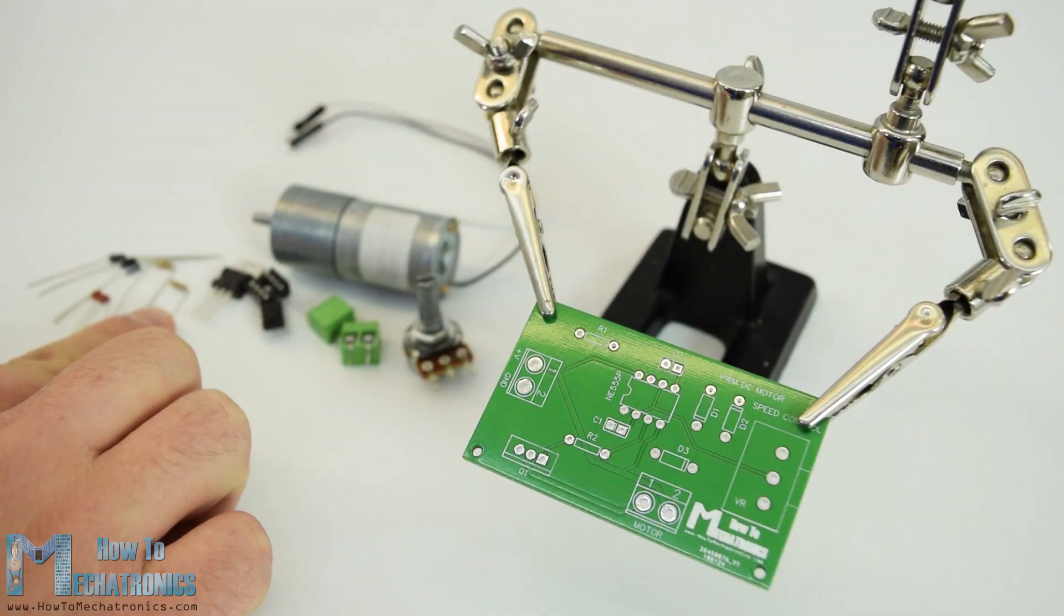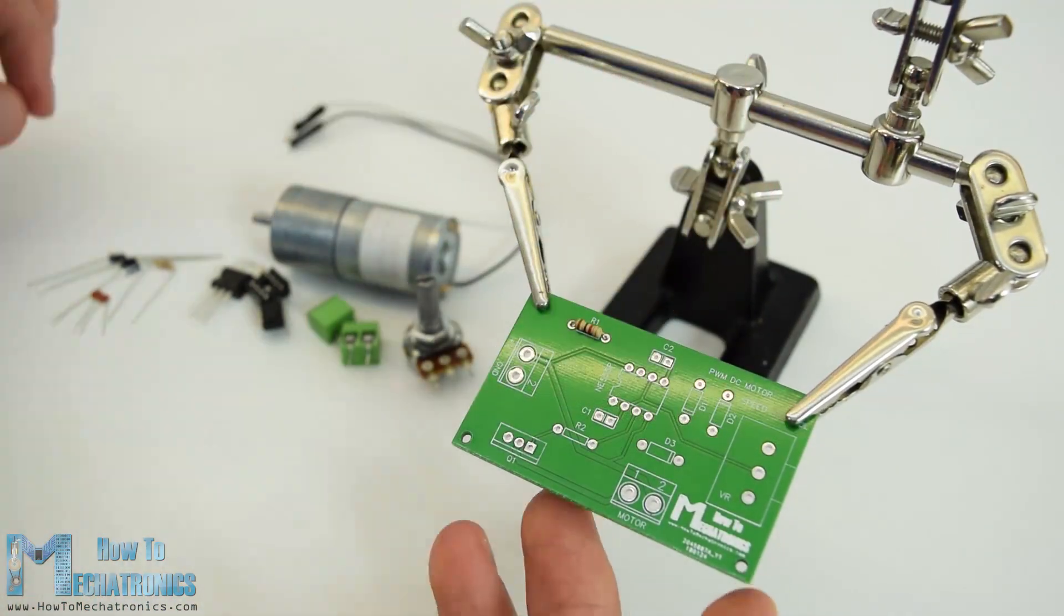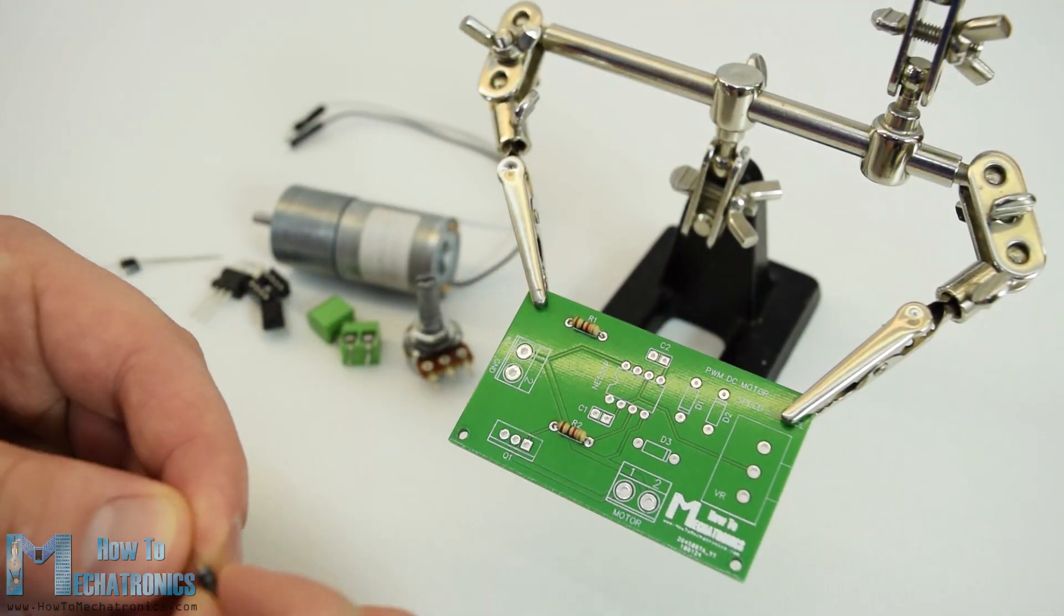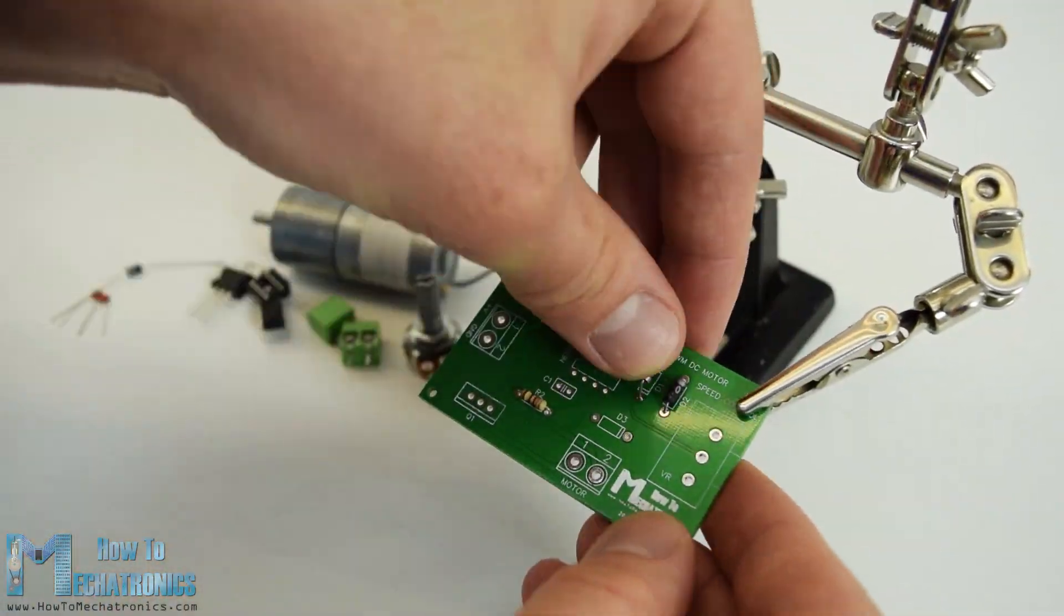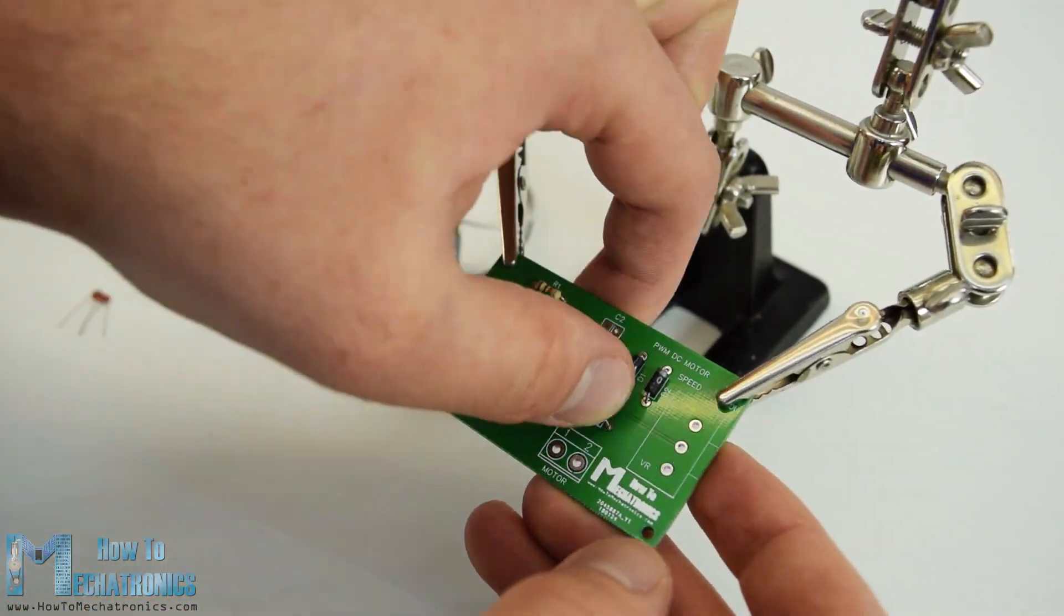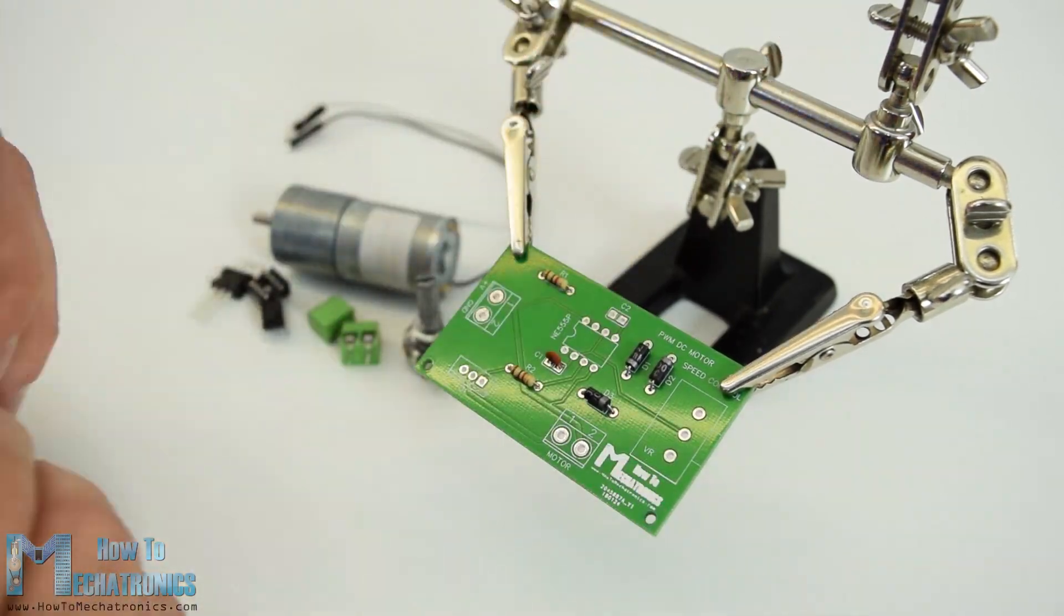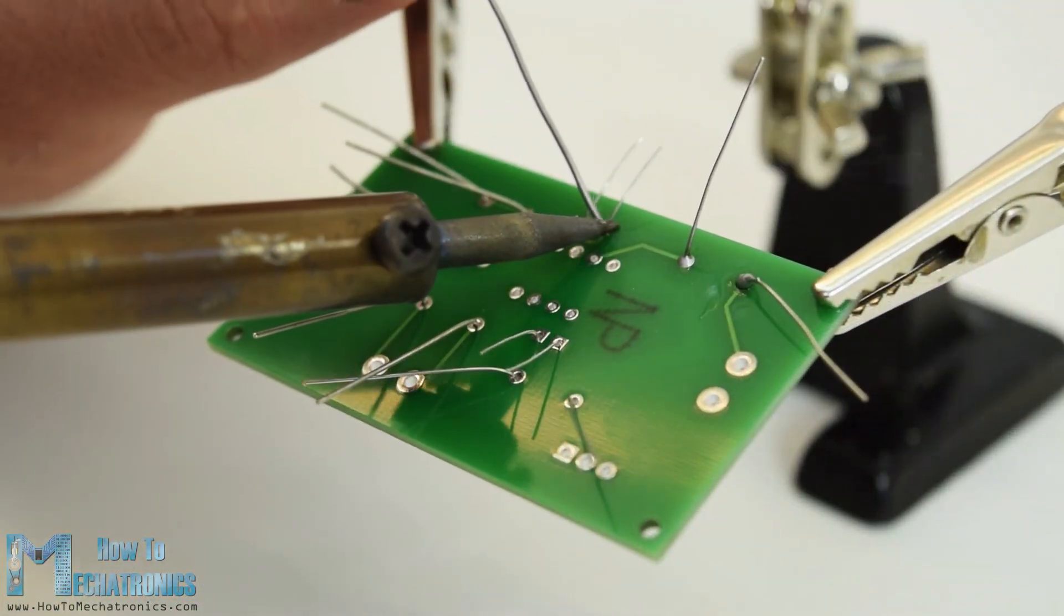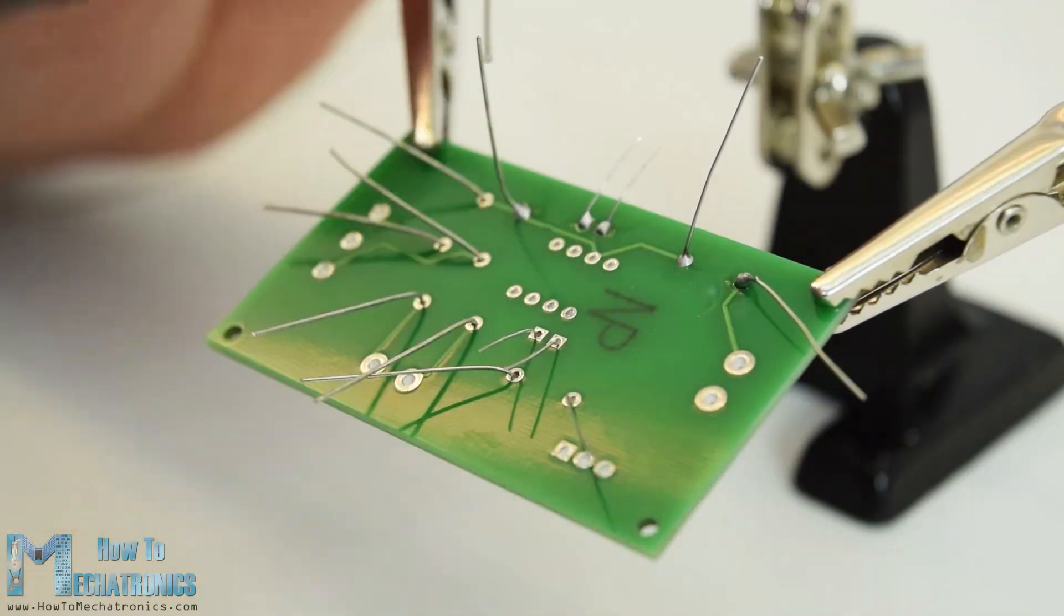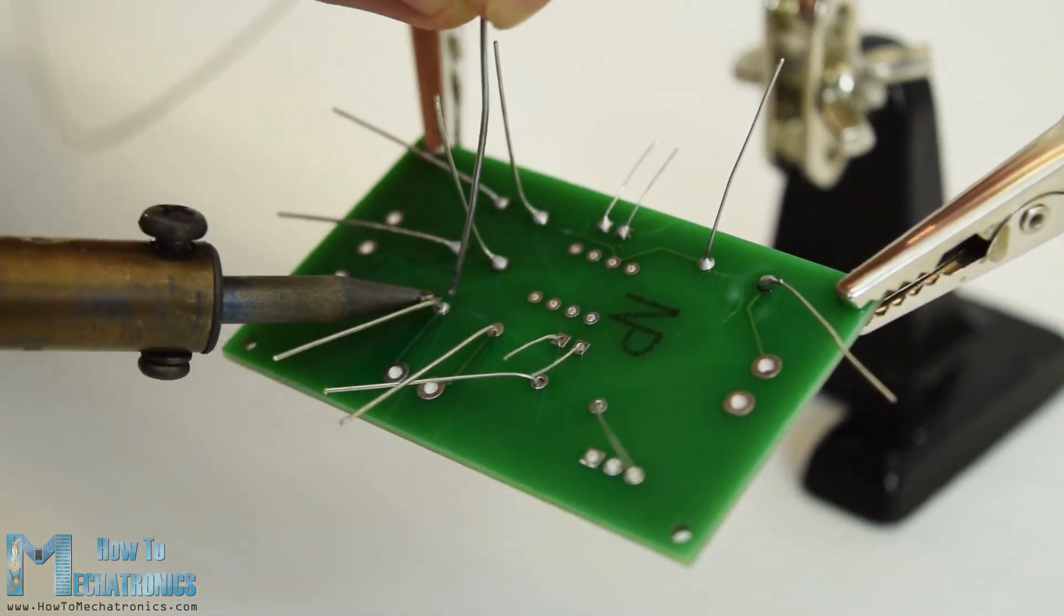Now we can move on to inserting the components onto the PCB. First I inserted the smaller components: the resistors, the diodes, and the capacitors. I bent their leads on the other side so that they stay in position when I flip the board for soldering.